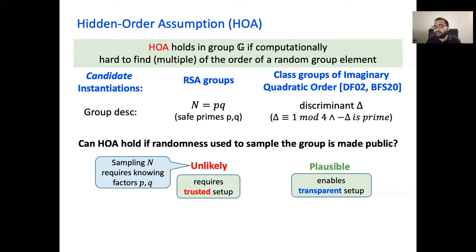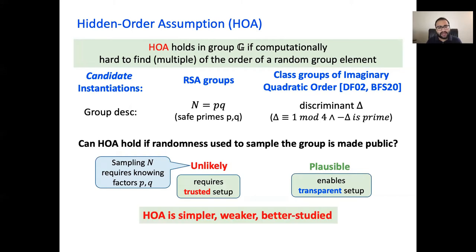So with RSA groups we would need trusted setup, but here the hidden order assumption can be based on factoring. In summary, the hidden order assumption is well studied, simpler, and weaker in comparison with the assumptions used in prior work that we built on.